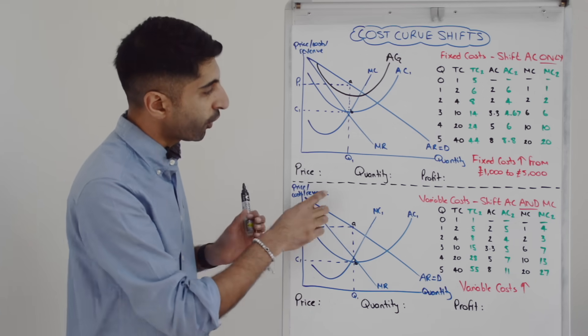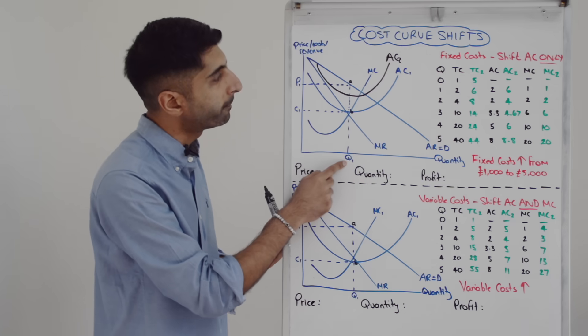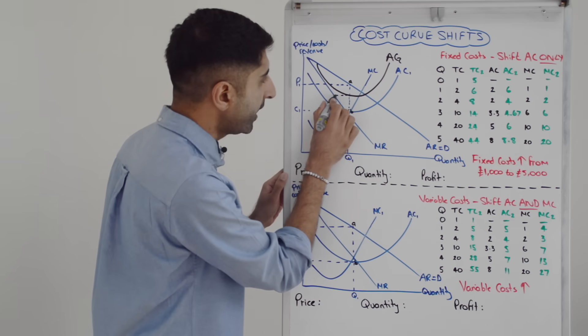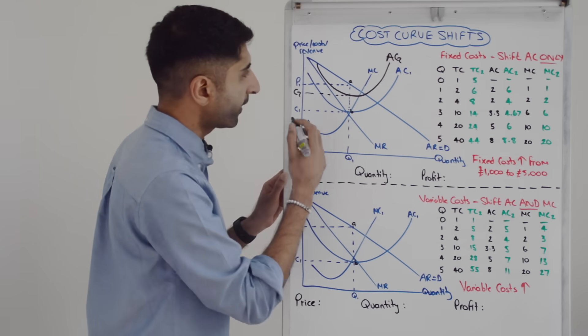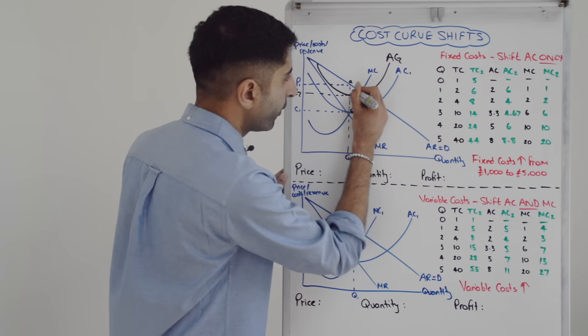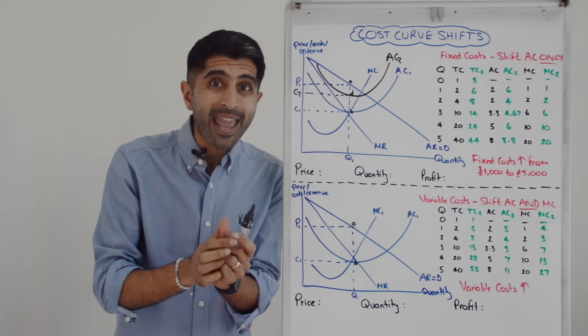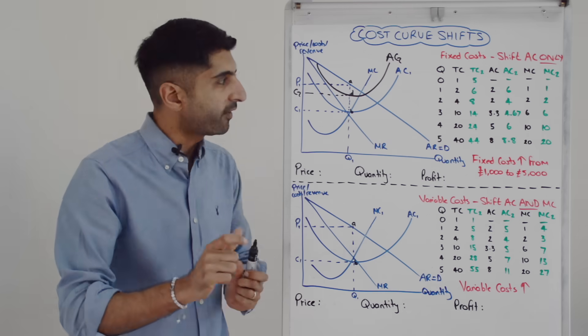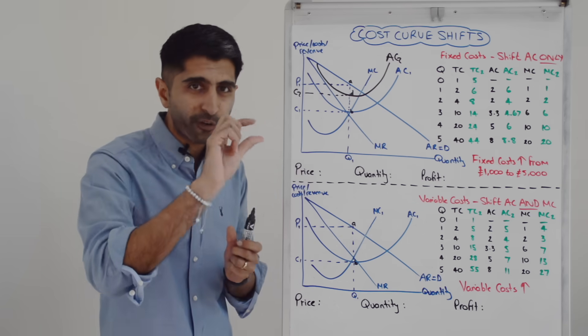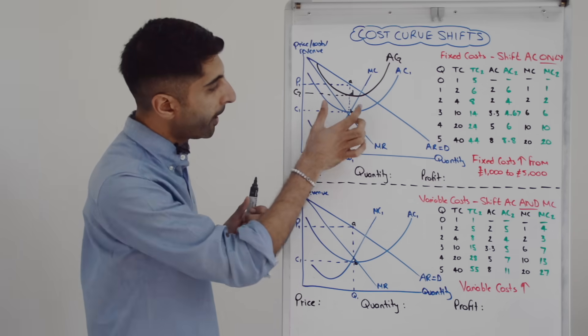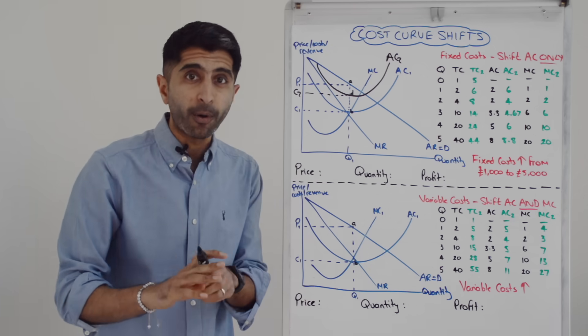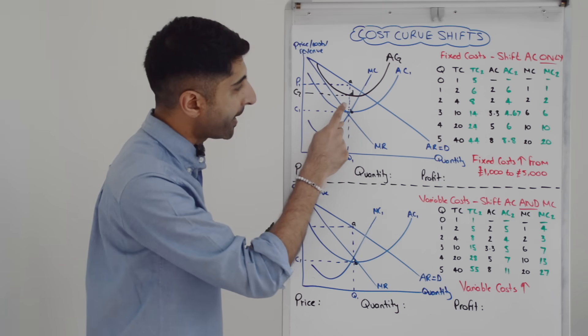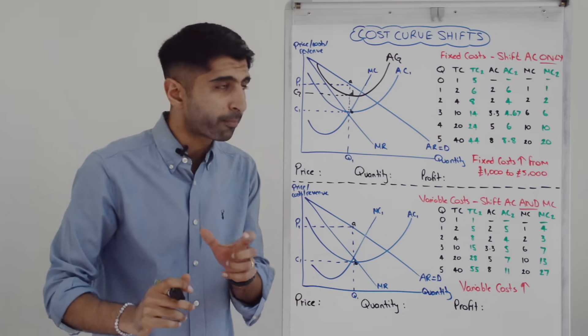But now with a higher average cost at the profit max point of Q1, AR remains at A. But the new average cost level is over here. Let's call this point C2. And here we'll label that D. So we can see that average revenue is A, average cost is D. So it's still supernormal profit, revenue greater than cost, but it's a much lower level. Multiply that profit margin by all of Q1, you get the supernormal profit box in total of P1ADC2 compared to P1ABC1 before. It's a lower profit level.